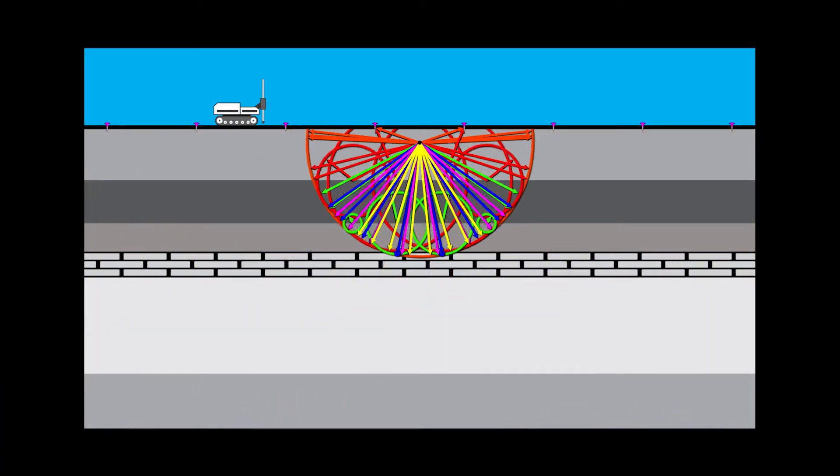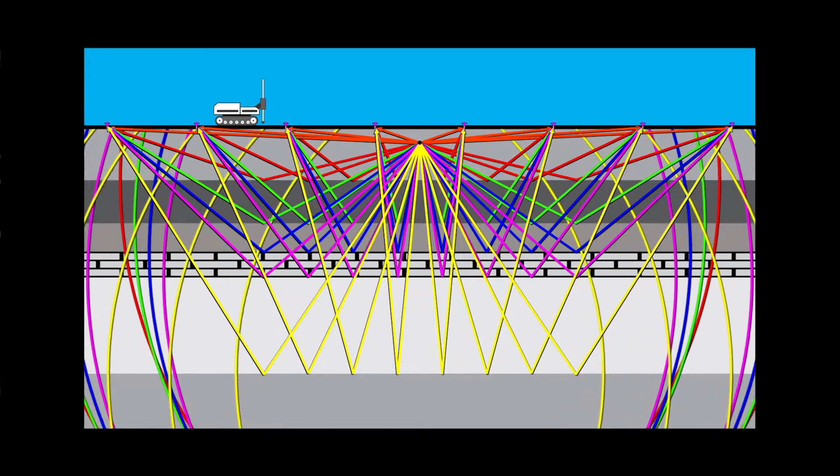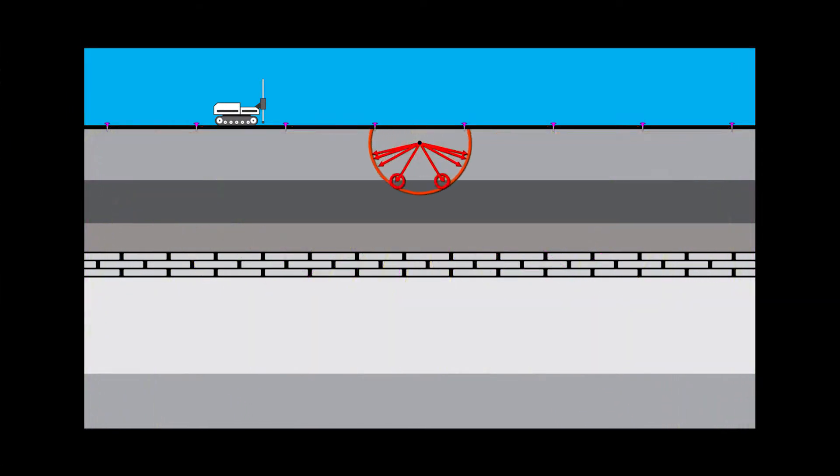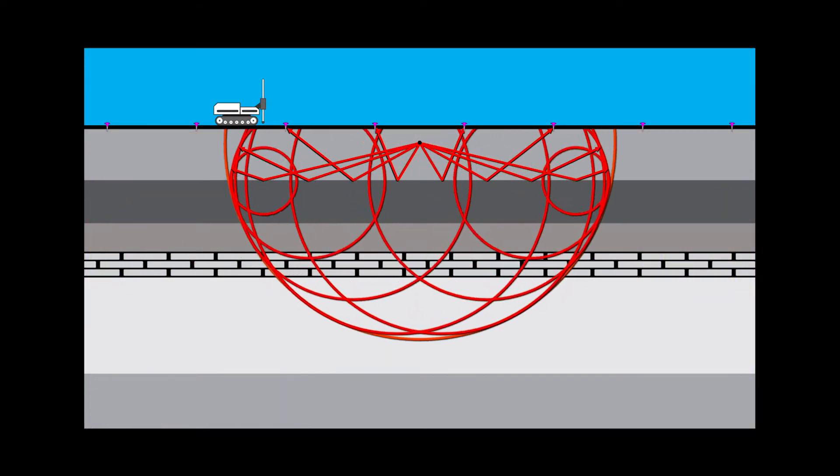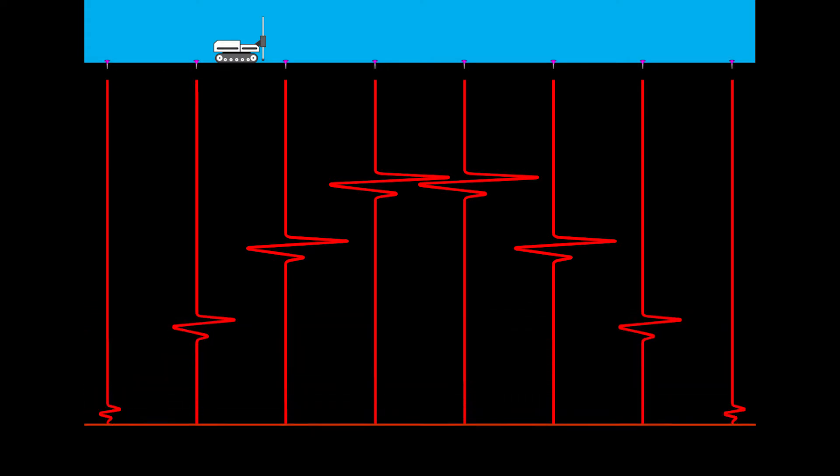For simplicity, we look at the responses received at the geophones from a two layer system without first arrivals. First we look at the first layer and the responses at the geophones. The responses are represented by blinking at the geophones and wavelets recorded in time.